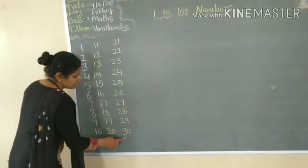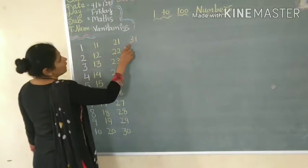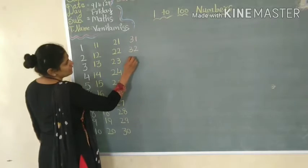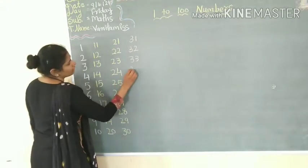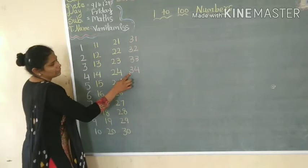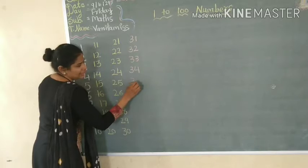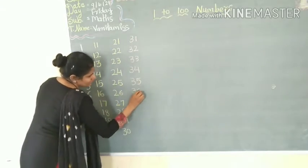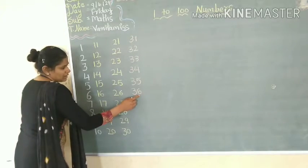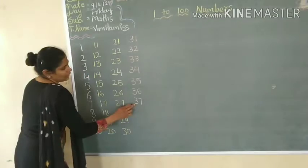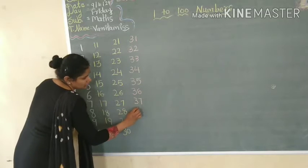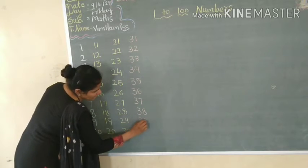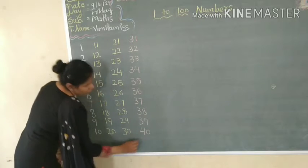Now after 30 is 31. After 31 is 32. And after 32 is 33. Then the next number is 34. After 34 is 35. Then after 35 is 36. Next number after 36 is 37. After 37 is 38. After 38 is 39, and then 40.